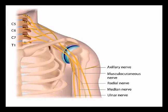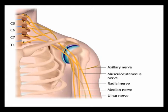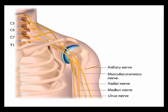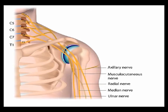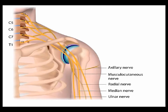The median nerve is a terminal branch of the brachial plexus. It forms from the merger of the medial cord and the lateral cord of the brachial plexus. Therefore, it transmits nerve signals from spinal nerve levels C5 through T1.